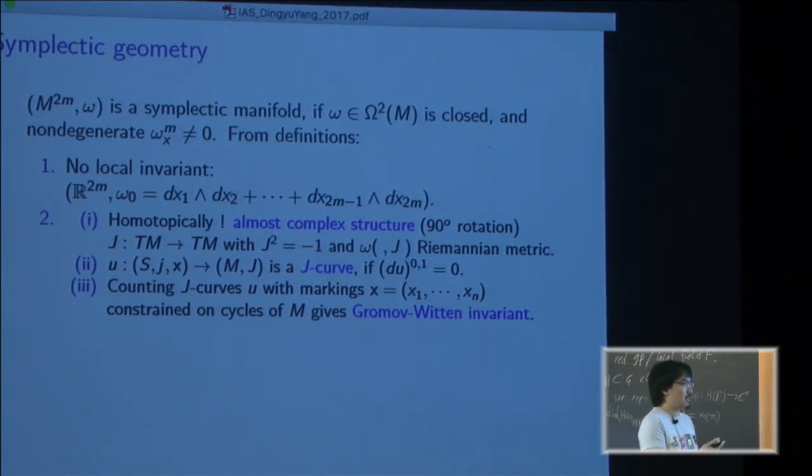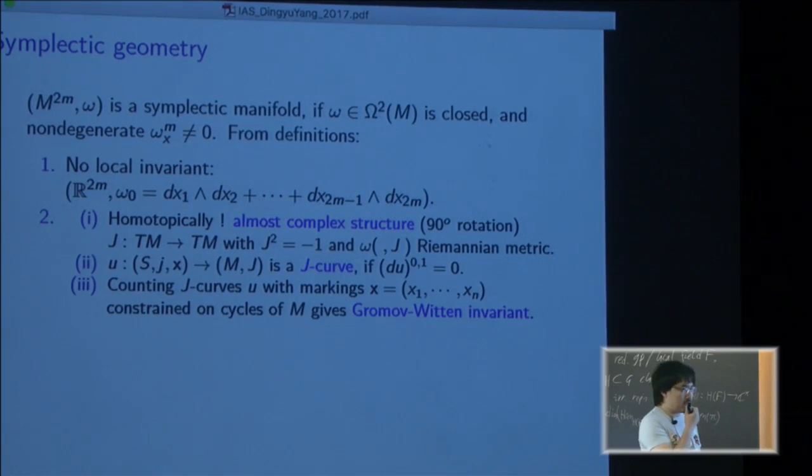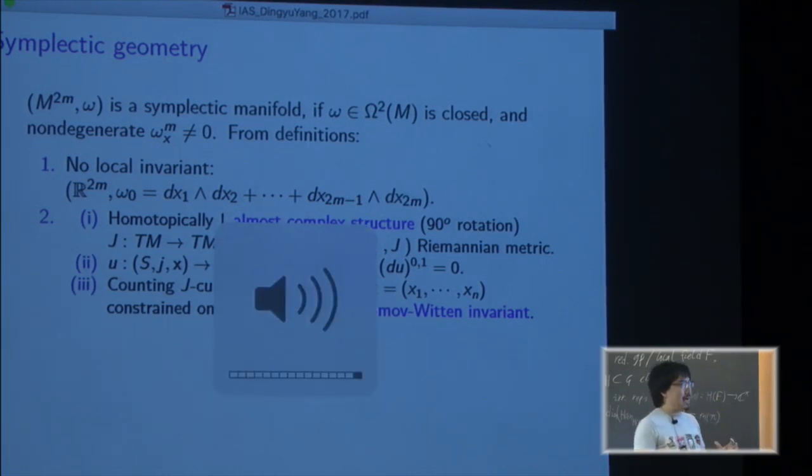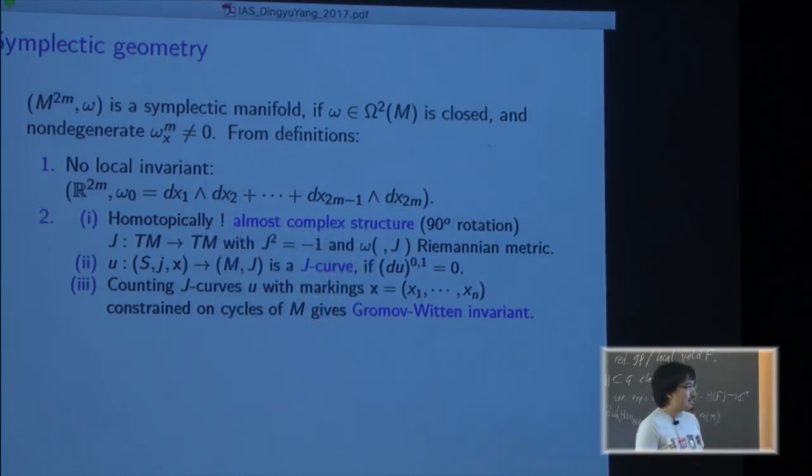X is a bunch of disjoint points on the curve, and the condition of being a J-curve is that the anti-linear part of the derivative is zero, meaning that the map, the tangent map, intertwines the complex structure of the domain and the target. Counting those subject to some constraints, asking if you're looking over the marked points it goes through some cycles in the target manifold, this gives you a Gromov-Witten invariant which is a global invariant of symplectic geometry.